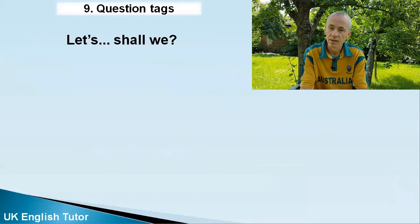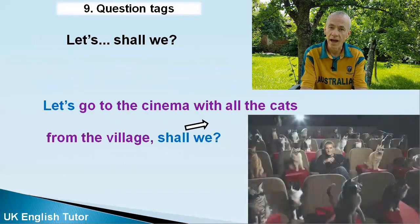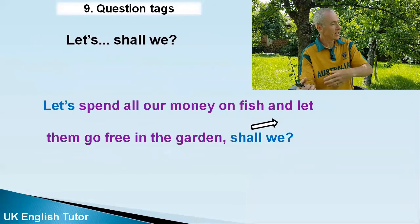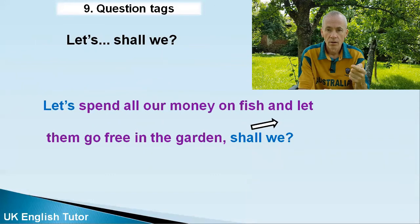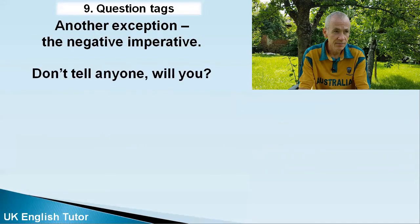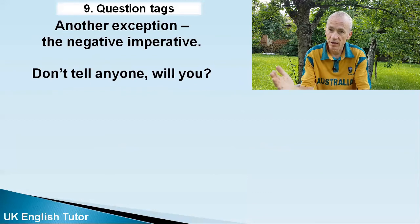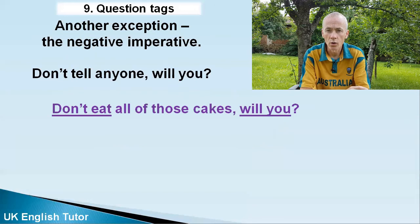Another difference is when you make a suggestion using the word 'let's,' meaning 'let us.' When the statement starts with 'let's,' the tag has to be 'shall we': 'Let's go to the cinema with all the cats from the village, shall we?' 'Let's spend all our money on fish and let them go free in the garden, shall we?' Another exception is when your statement is a negative imperative — a command or instruction not to do something, probably using 'don't' and then a main verb.